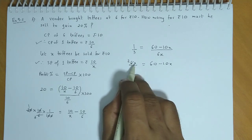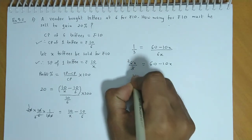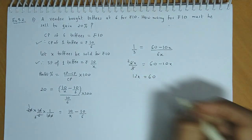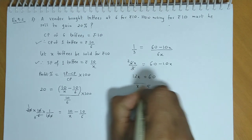2X plus 10X becomes 12X is equal to 60. So, X is equal to 5.